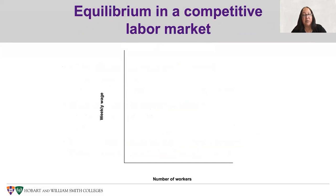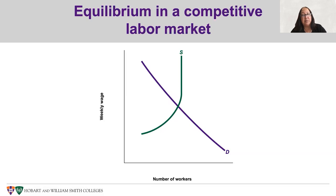A simple graph shows this. Here I'm labeling it as a weekly wage and the quantity of labor as the number of workers. There's a downward sloping demand curve in this market and an upward sloping supply curve. It gets fairly vertical at some point as we basically run out of workers in the market, and then we see that the intersection of supply and demand determines a weekly wage of five hundred dollars in this market and a number of workers of a hundred thousand.